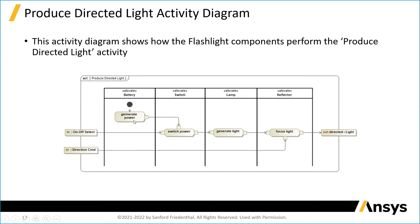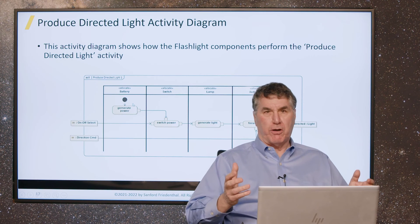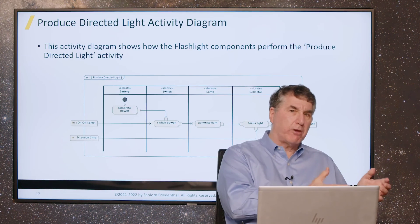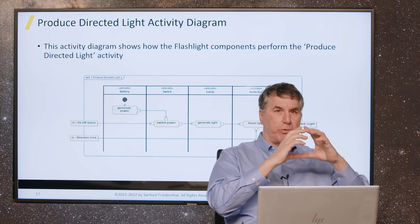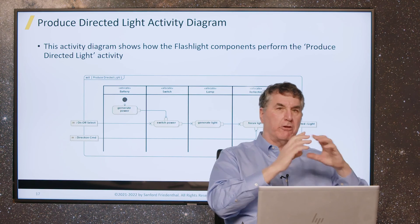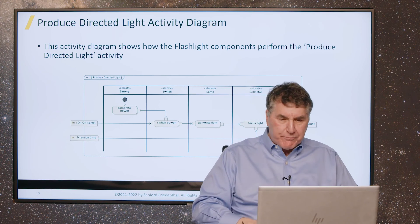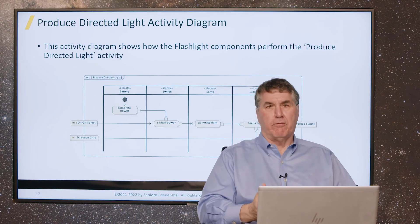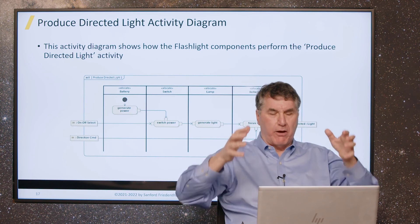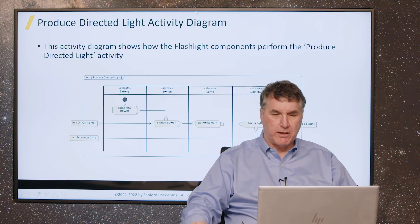The battery performs generate the power, the switch switches the power, and so on. These are the inputs and the outputs — the same inputs and outputs that showed up on the earlier black box view, where all we had was produced directed light in conjunction with the user functions and the environment functions.